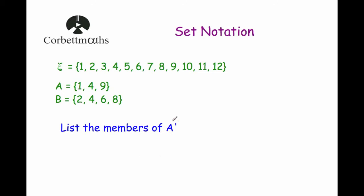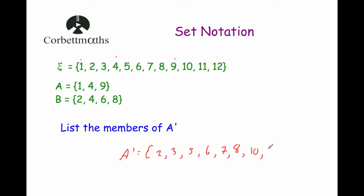Our next question says list the members of not A — the complement of A. We've got A being {1, 4, 9} and the universal set being numbers 1 to 12. So we're looking for anything that's not in A, which would be everything else: 2, 3, 5, 6, 7, 8, 10, 11 and 12. If the question just said list the elements of not A, you could just write down those numbers.